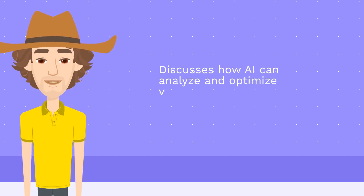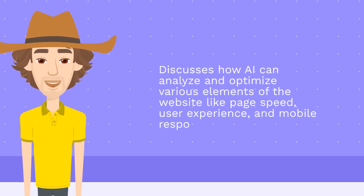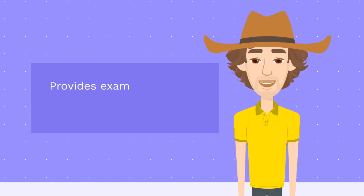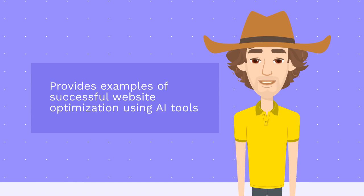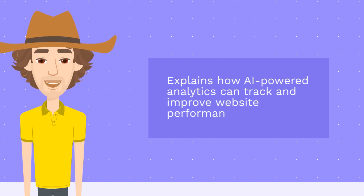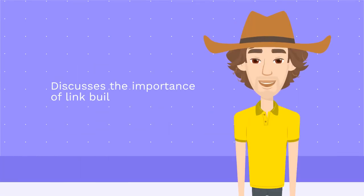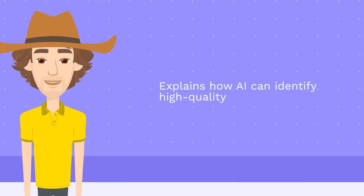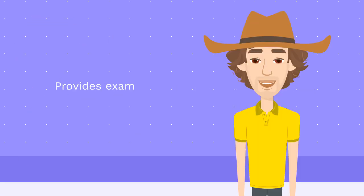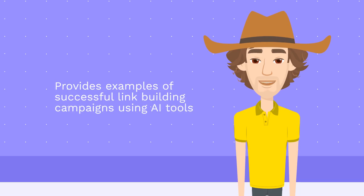Discusses how AI-powered analytics can track and improve website performance over time. Link building and AI discusses the importance of link building to improve ranking on Google. Explains how AI-powered analytics can identify high-quality, relevant websites for link building. Provides examples of successful link building campaigns using AI tools.